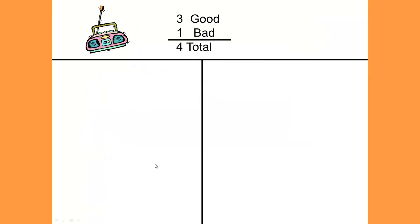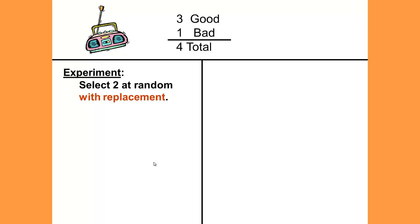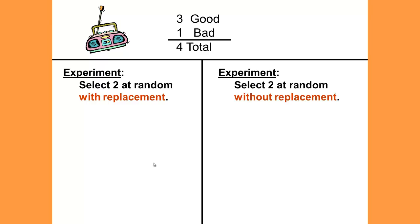Here is our sample space and we will conduct two experiments. Experiment one: select two at random with replacement. Experiment two: select two at random without replacement.